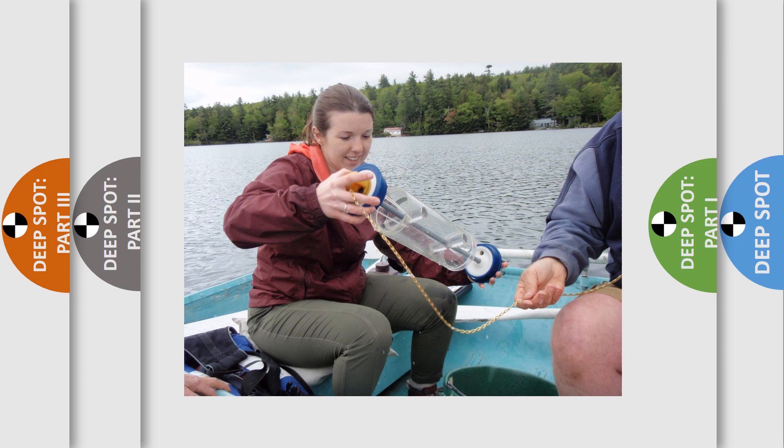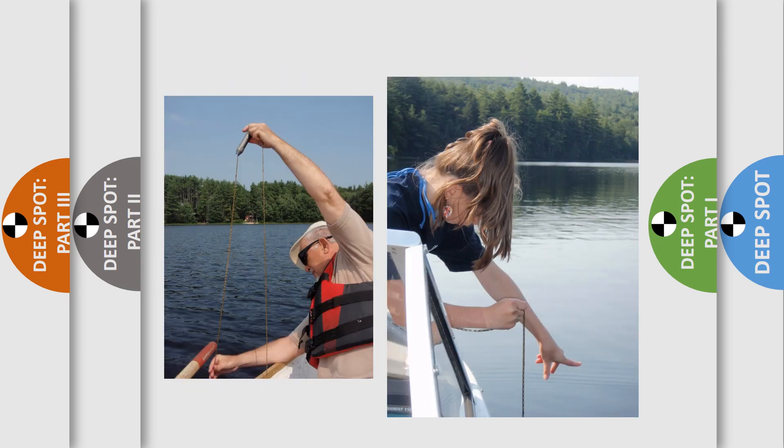Once the bottle is set up, pull apart both ends to lock the bottle in the open position. When you pull the ends apart, the bottle should click into a locked open position. Lower the bottle into the water column to the desired depth. The chain or rope has a mark every half a meter. Place the mark of the desired depth on the water's surface. Take the messenger, the weight used to close the bottle, and attach it to the chain. Do this over the boat so you don't lose the messenger in the water if you drop it.